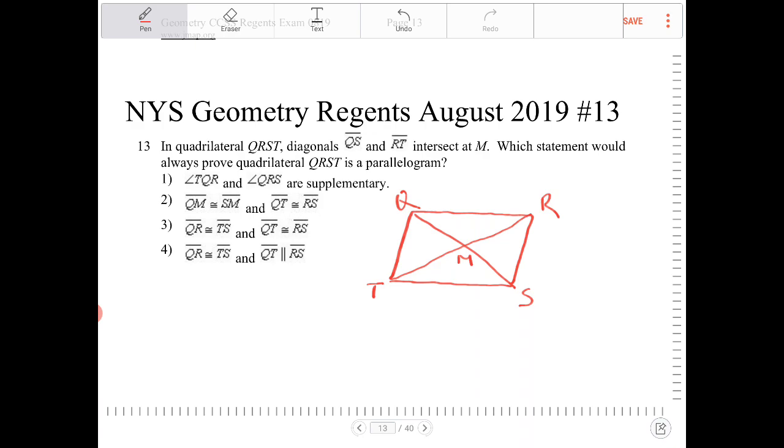Angle TQR and angle QRS are supplementary. That has to be true. Yes. However, that alone is not going to be enough to show that it's a parallelogram because I can certainly draw something like this where these angles are supplementary and so again I can have something like this.